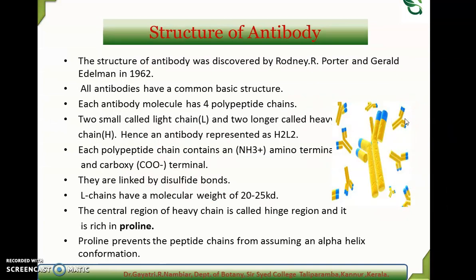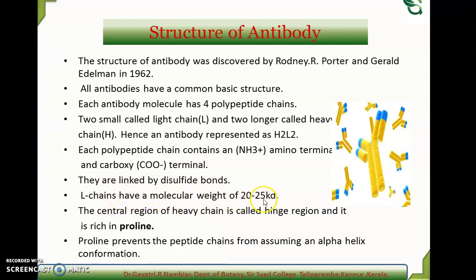The structure of antibody was discovered by Rodney R. Porter and Gerald Edelman in 1962. All antibodies have a common basic structure — each antibody molecule consists of four polypeptide chains: two smaller light chains and two longer heavy chains. They are represented as H2L2. Each polypeptide chain contains an amino terminal and a carboxy terminal, and they are linked by disulfide bonds. Light chains have a molecular weight of 20 to 25 kD.